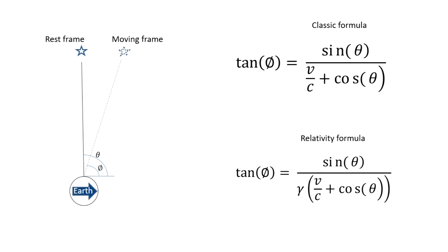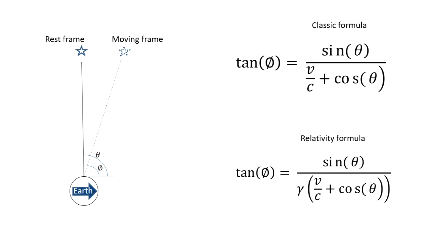Classical theory and relativity have different formulas for explaining the effect, with relativity adjusting the formula to maintain the speed of light as constant for the observer. This chart shows the apparent position for a star at 90 degrees from the motion of the observer as the observer's velocity increases.